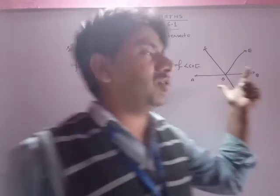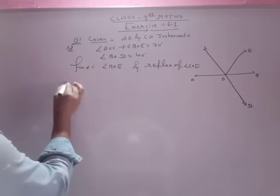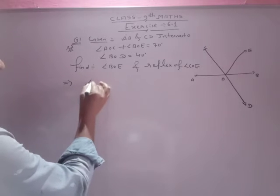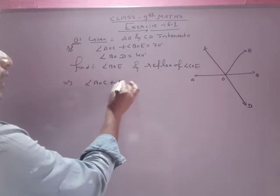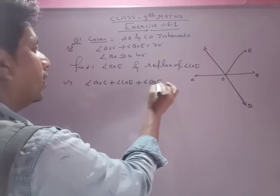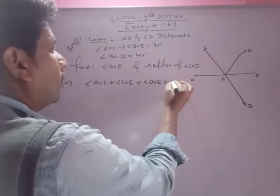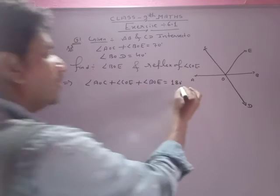जो ray होता है, वो extends on AB. अगर OC और OE जो है इस property से अगर जाते हैं तो sir, angle AOC plus angle COE plus angle BOE equals to 180 degree by linear pair property.